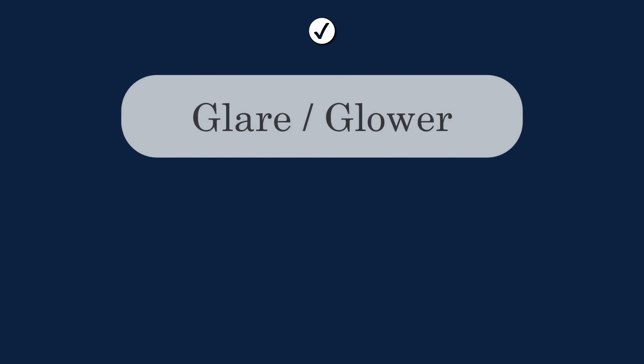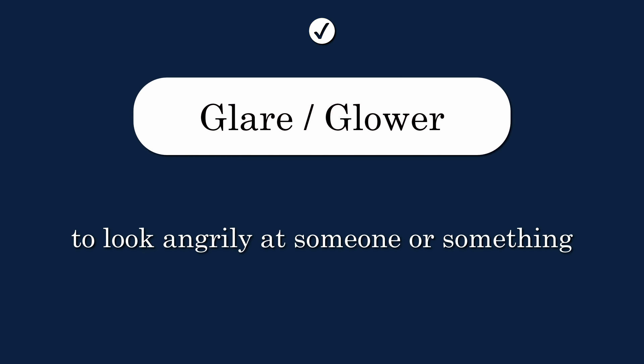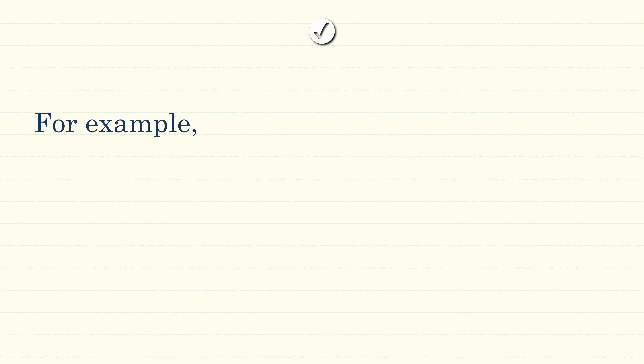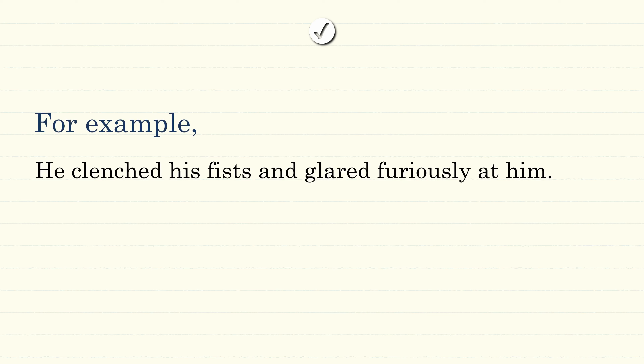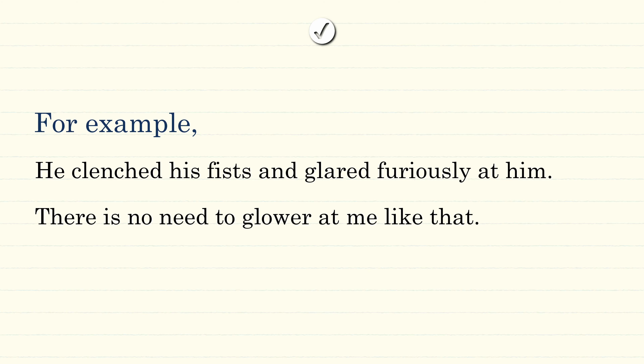Glare and glower. These verbs mean to look angrily at someone or something. He clenched his fists and glared furiously at him. There's no need to glower at me like that.